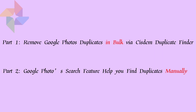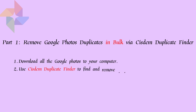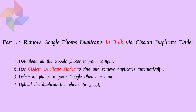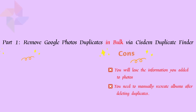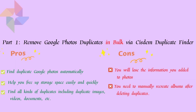In this video, I will show you two methods on how to delete Google Photos duplicates. Method 1: Remove Google Photos duplicates in bulk with System Duplicate Finder. First, download all the photos in your Google Photos account to your computer, then use a duplicate finder tool to find and remove duplicate photos automatically, then delete all photos in your account and upload the duplicate-free photos to Google Photos. This method can help you find all duplicate photos automatically and save you much time.